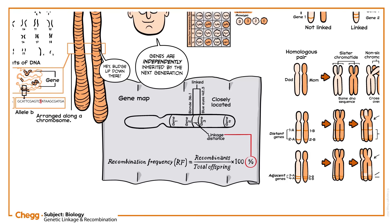Recombination frequency is represented as a percentage, and it has a direct relationship with the distance between genes. An RF of 1% is equated to 1 centimorgan, or 1 map unit. If the recombination frequency is more than 50%, the genes are considered unlinked and are likely to be assorted independently. Determining the recombination frequency for all genes helps to map the whole genome of an organism.